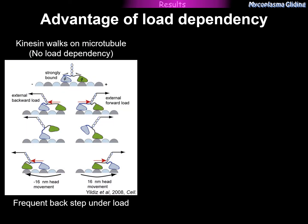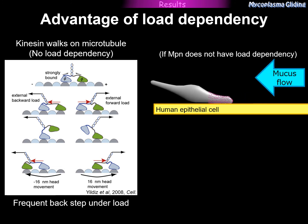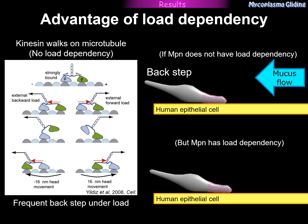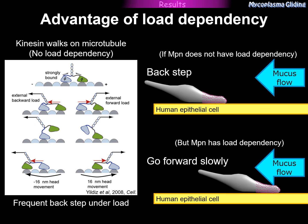Load dependency of step size has an important advantage. The eukaryotic motor protein kinesin is known to have no load dependency in step size. When kinesin experiences a large load, it shows frequent backsteps. So if pneumoniae did not have load dependency in step size, the cell would move backward under mucus flow. But because pneumoniae does have load dependency in step size, even under mucus flow the cell can move forward. This mechanism is probably important for their infectious process.